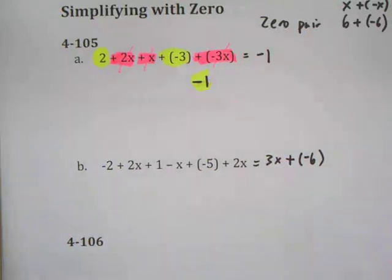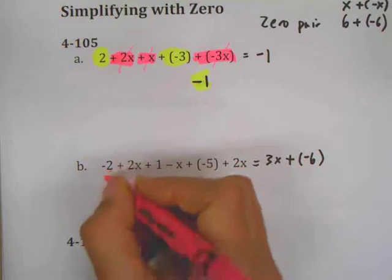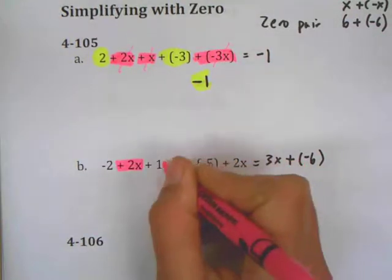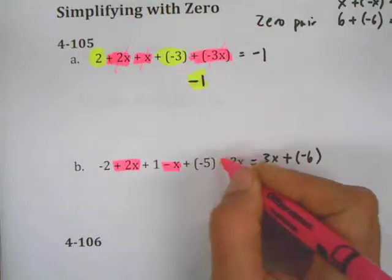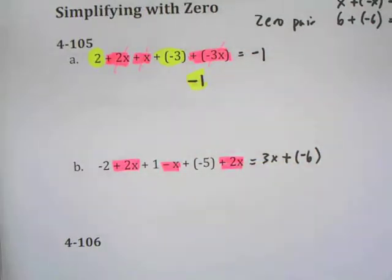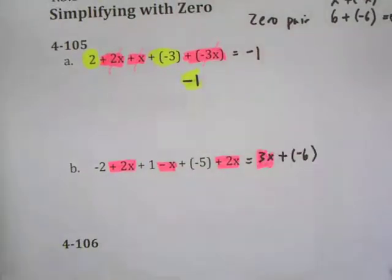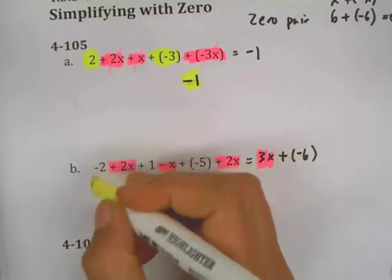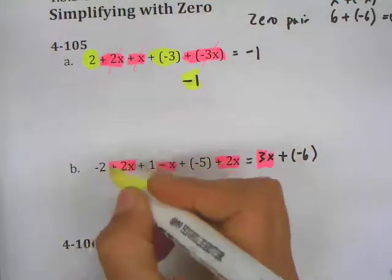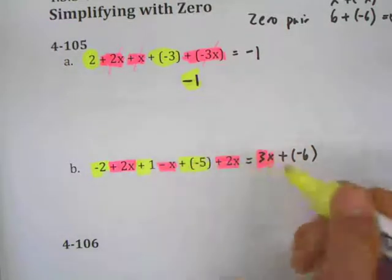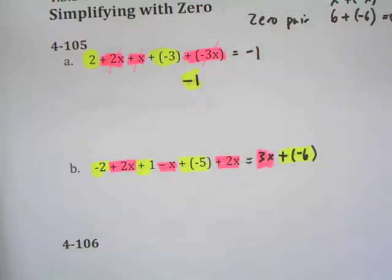Or you could just say three x minus six. Looking at this without the algebra tiles: you always want to include the sign in front. So plus two x minus x, plus two x minus x is x, plus two x is three x. With the constants, minus two plus one is negative one, and negative one plus negative five is negative six — so three x minus six.